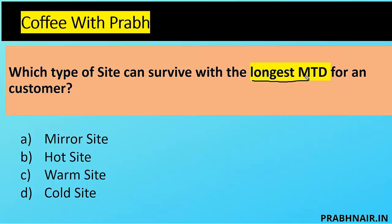Next: which type of site can survive with the longest MTD? One thing to remember — when going for the highest MTD, it comes with less cost; if you want a lowest MTD, it comes with high cost. Mirror site cannot be the answer because mirror requires the shortest MTD, so A is eliminated. Hot site will be active in 24 hours, warm site is like 24 to 48 hours, but the closest option is cold site because it takes the maximum time to restore service — everything needs to be moved for operation. The answer is D.